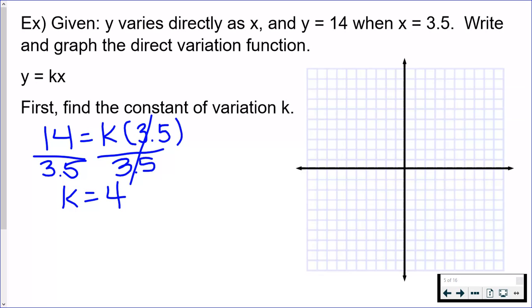If I know that y equals k times x and k is 4, my function is y equals 4x. So once I plug in the 14 and the 3.5, I'm done with those. I use those numbers to find k. Now that I find k, I have my function.